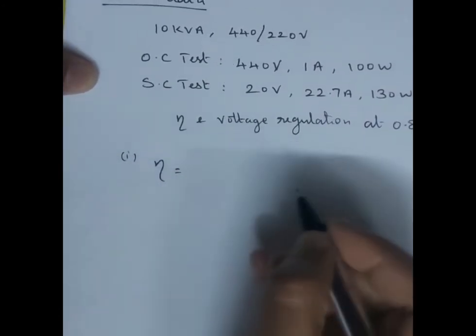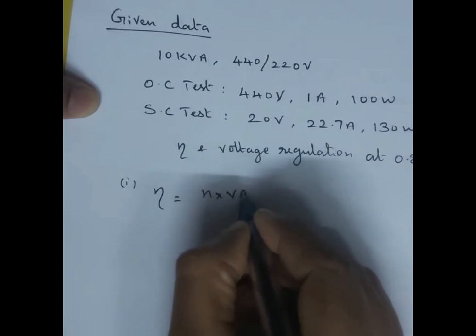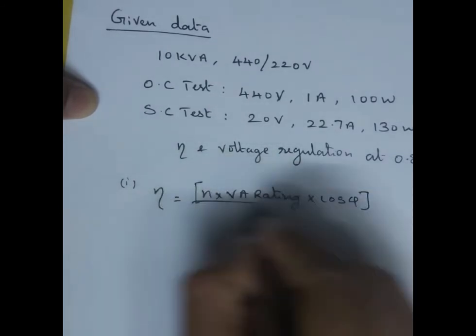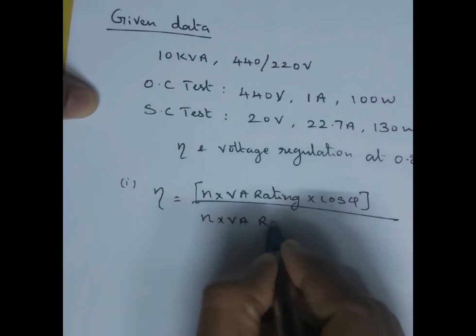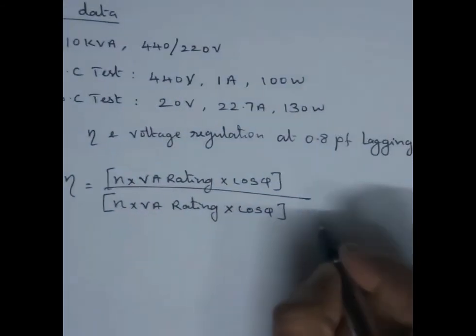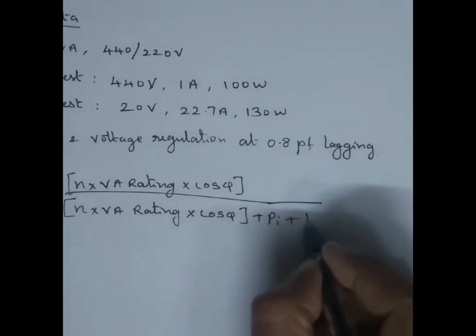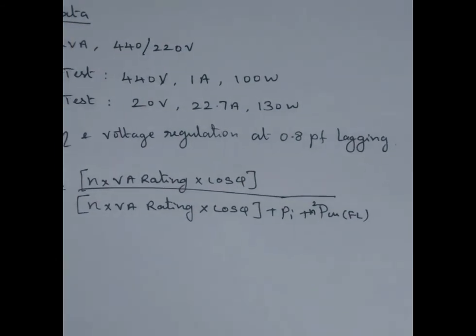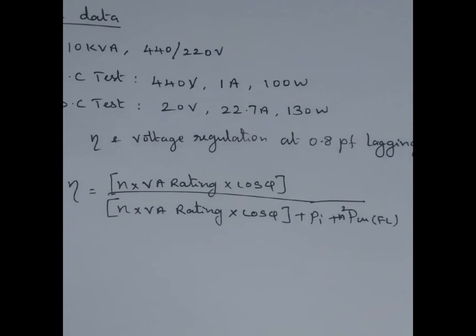First, we will find out efficiency. The formula for efficiency is: η = (n × VA rating × cos φ) / (n × VA rating × cos φ + iron loss + n² × full load copper loss). Since the problem does not specify any partial load, we consider n = 1.